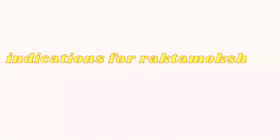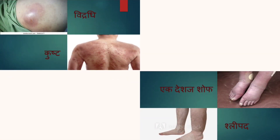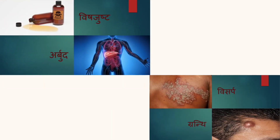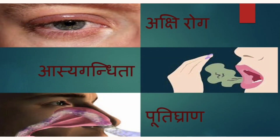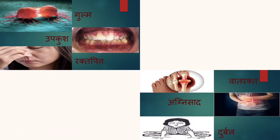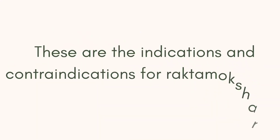Indications for Rakthamokshana: Vidradi, Pusht, Ekadeshjashop, Shlipad, Vishajust, Arbuda, Visarpa, Granthi, Sthanaroga, Vidarika, Kalashaluka, Trimidandika, Mukapaka, Akshiroga, Asegandita, Puddigrana, Gulma, Uppakusha, Praktapita, Vataraktha, Agnisadha, Durupala. These are the indications and contraindications for Rakthamokshana.